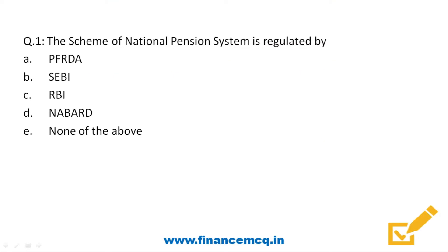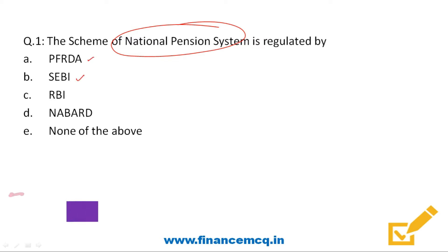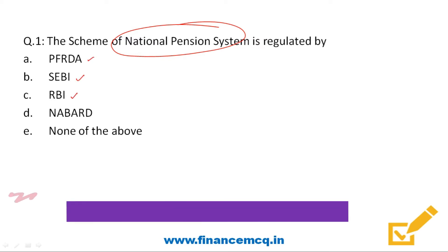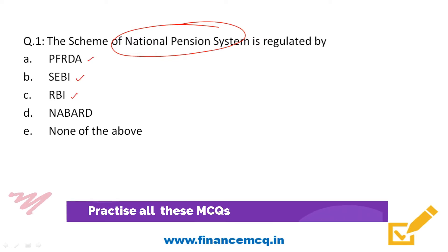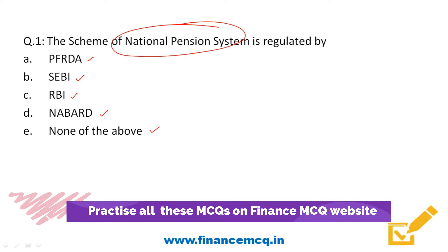The first question is: the scheme of National Pension System is regulated by — option A: PFRDA, option B: SEBI, option C: RBI, option D: NABARD, and last option: none of the above.